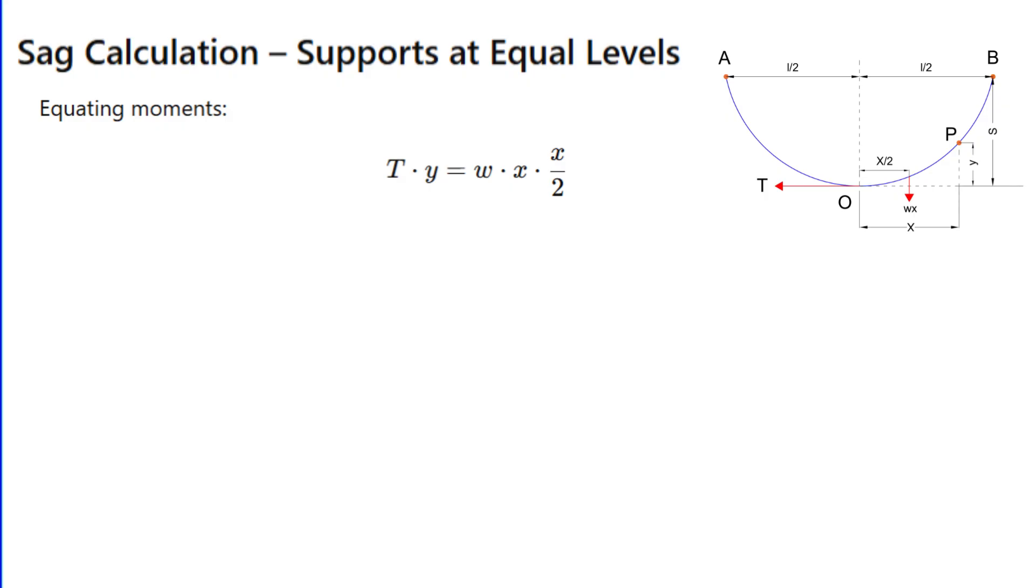Equating moments: T times y equals w times x times x/2, so y equals wx²/2T. Now at the support A, x equals l/2 and y equals sag s. Therefore, sag s equals wl²/8T. That's our famous sag formula for equal level supports.